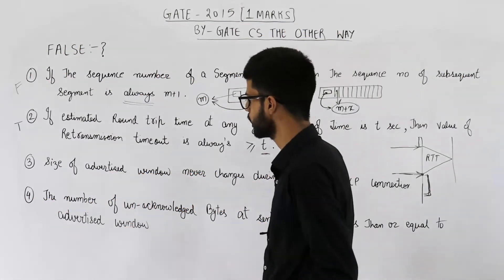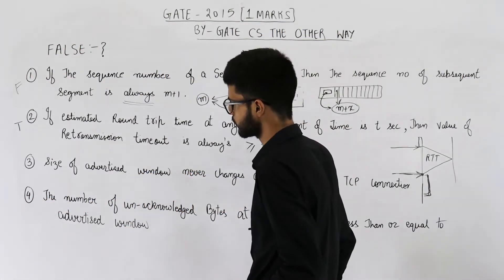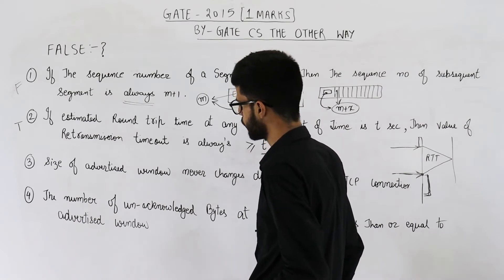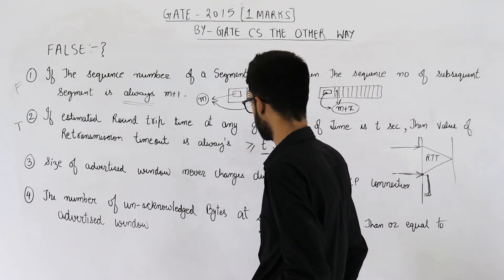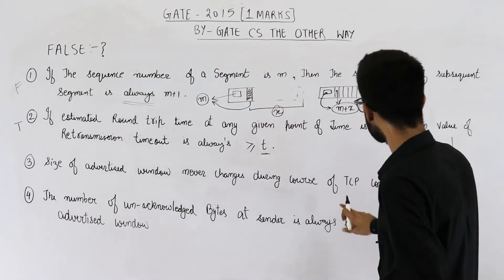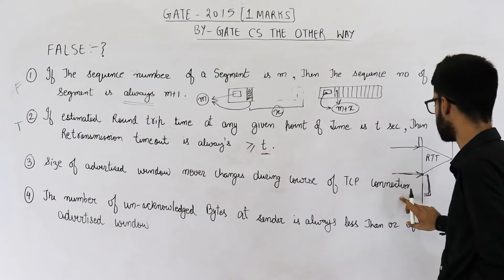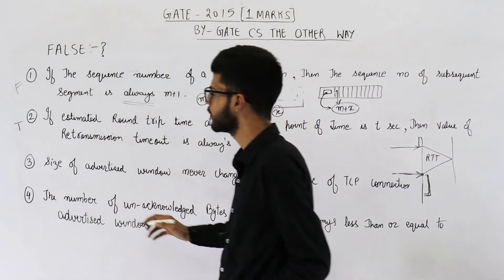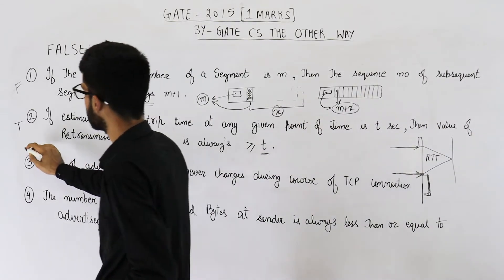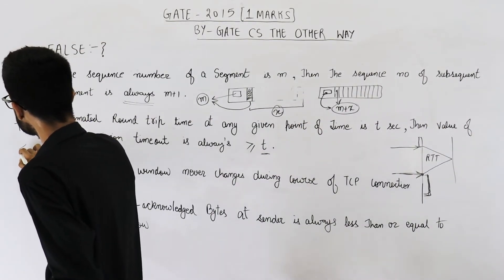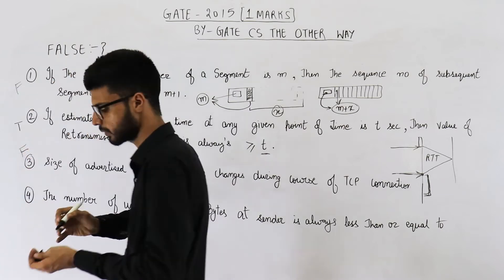Now let us see statement number 3. It says the size of the advertised window never changes during the course of a TCP connection. This one is also false — the size of the advertised window keeps on changing.